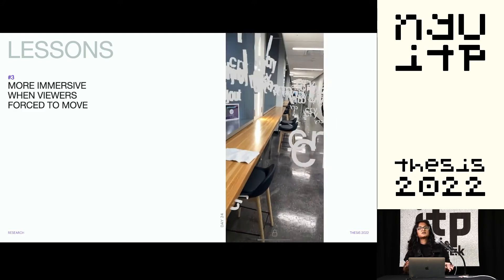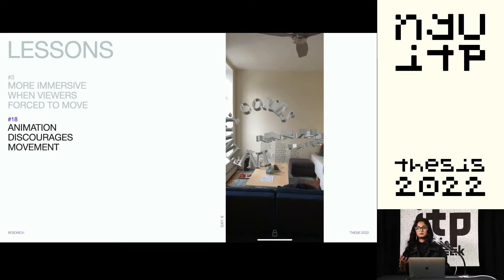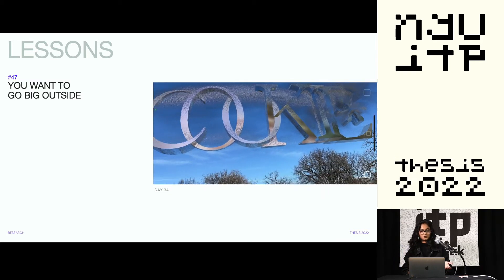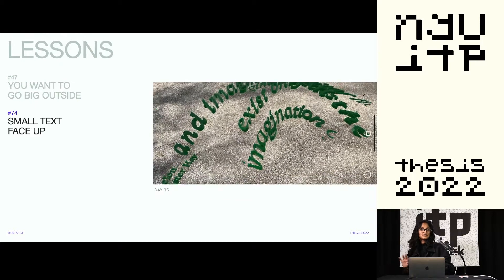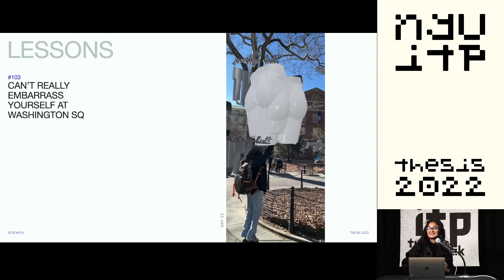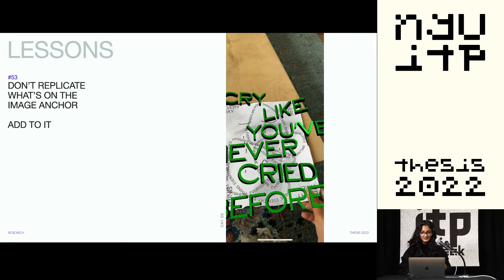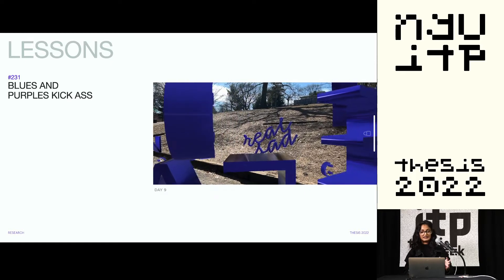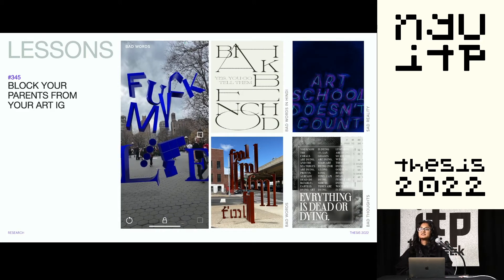So one thing I learned was it's more immersive and you force the viewer to move through your experience. Animation in AR discourages movement — people just want to stand and look at it. If you're going outside, you want to go big with type because smaller text is not visible and there's too much visual clutter. If you have to use small text, make sure it's face up because the floor tends to be less visually cluttered. I learned that you can't really embarrass yourself at Washington Square, even if you're chasing giant naked butts. I learned: don't replicate what's on the image anchor — add to it. We don't have enough blues and purples, which is why AR in blues and purples really stands out outside.